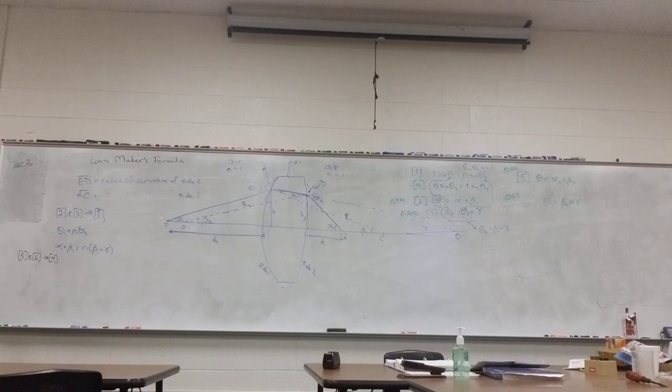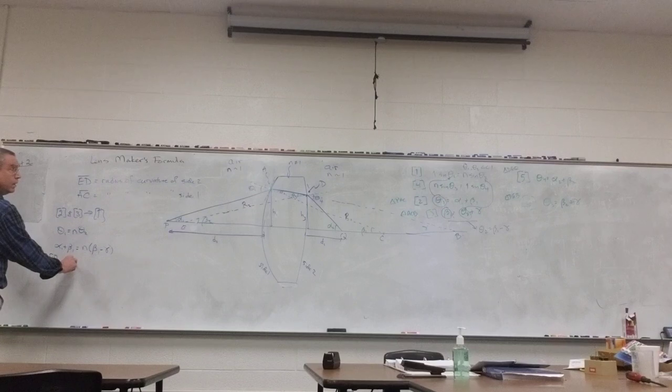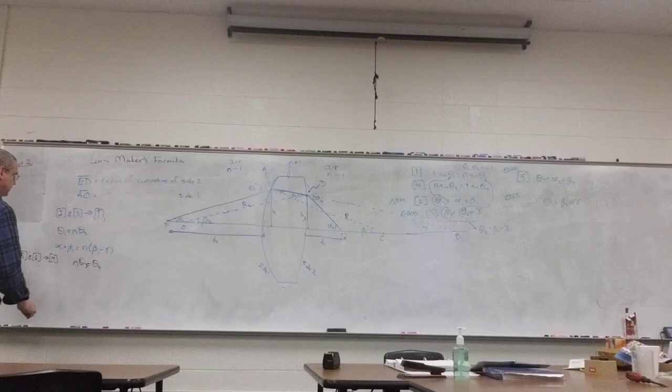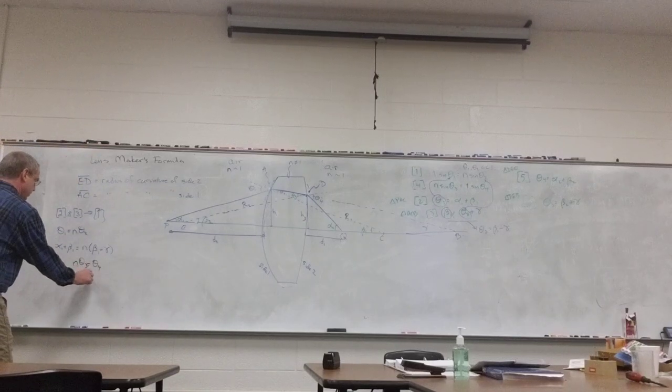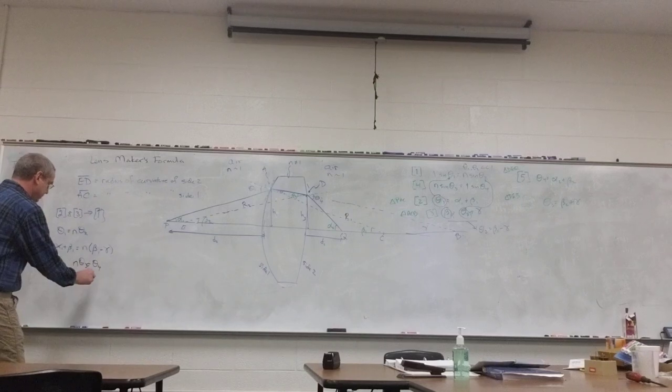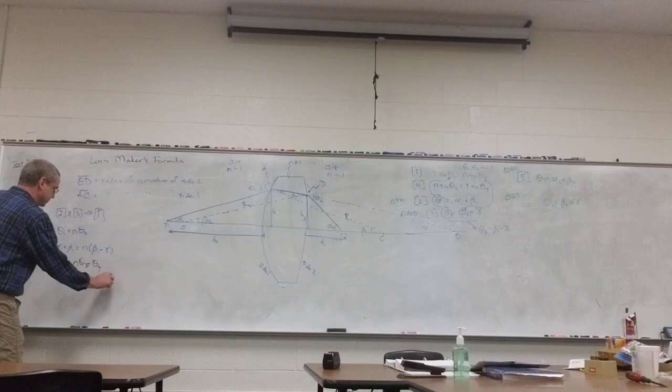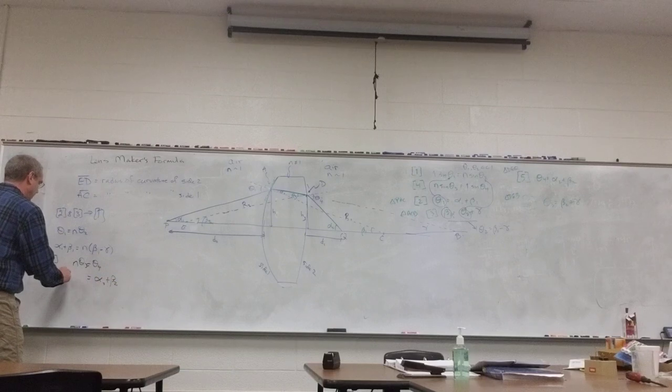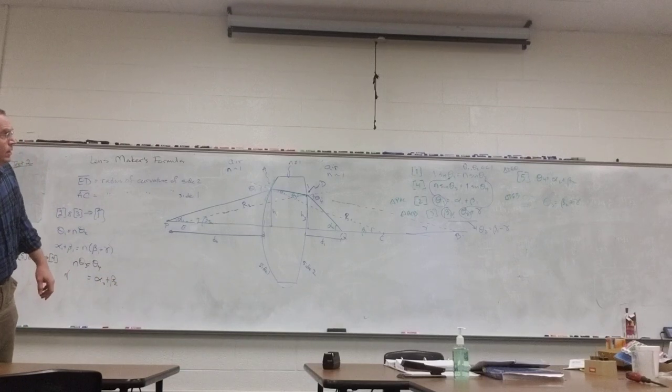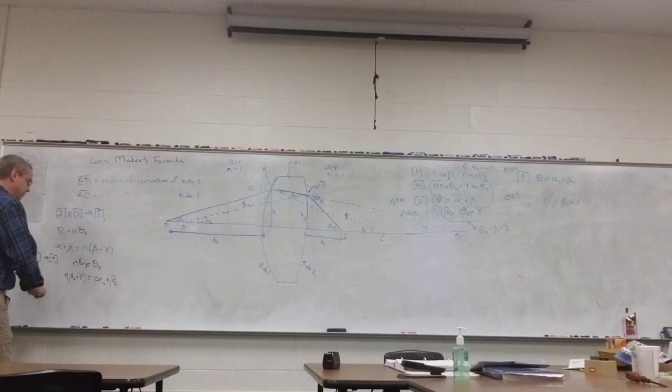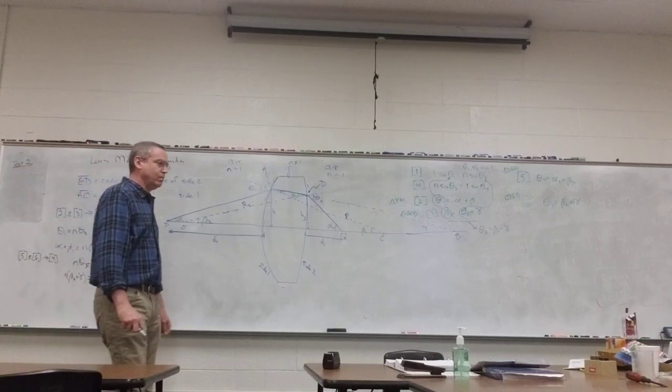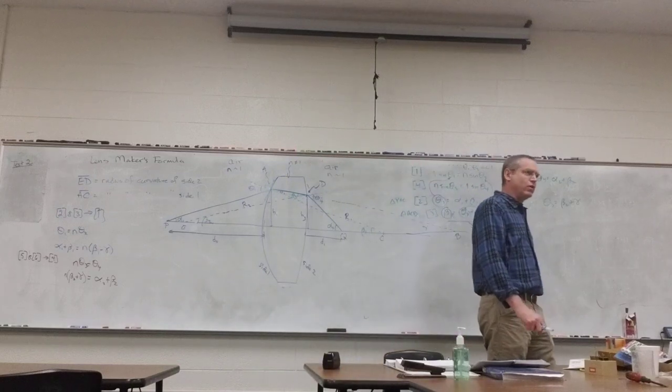Some more small angle approximation that we're doing. We have n theta 3 equals theta 4. Equation 5 is theta 4, so that's equal to alpha 2 plus theta 2. And theta 3 is beta 2 plus gamma.